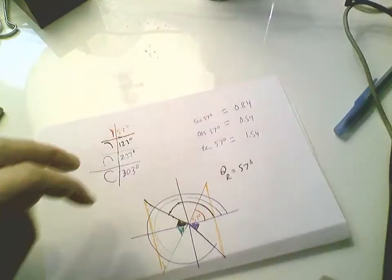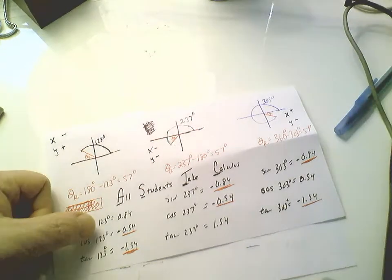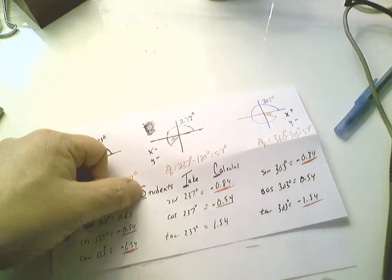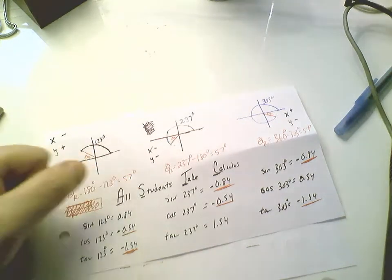What do you notice? Same values, except cosine and tangent both negative. Sine is the only thing that's positive. S, sine - All Students Take Calculus. Quadrant two, it's the sine that's positive.